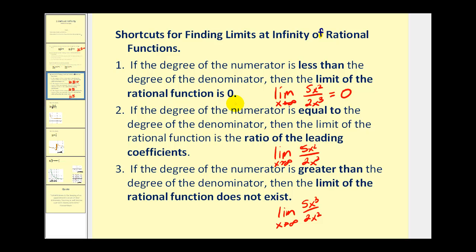The second case is when the degree of the numerator is equal to the degree of the denominator. If this is the case, then the limit is equal to the ratio of the leading coefficients. Here's an example where they're both degree two, and the ratio of the leading coefficients is five to two, therefore this limit is equal to five halves.